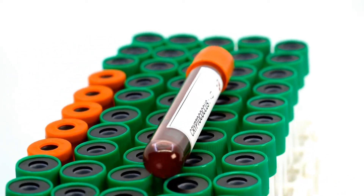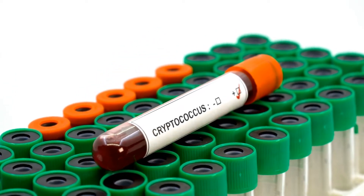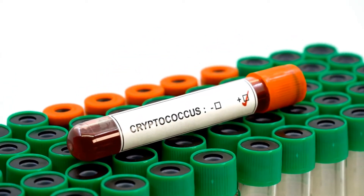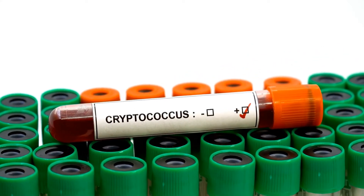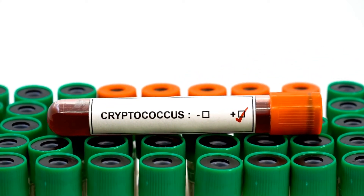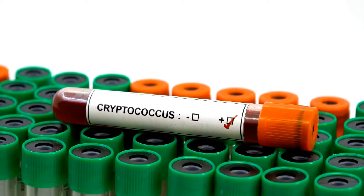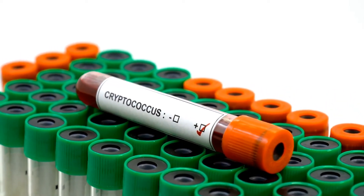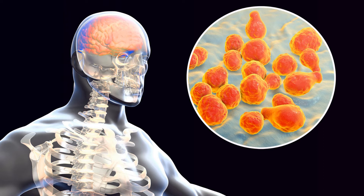In the USA, Cryptococcus neoformans is found in southern California, the US Pacific Northwest regions, British Columbia, Mexico, parts of Africa, and Australia. In the USA, Cryptococcus neoformans is responsible for 30 to 66 infections per million population each year.